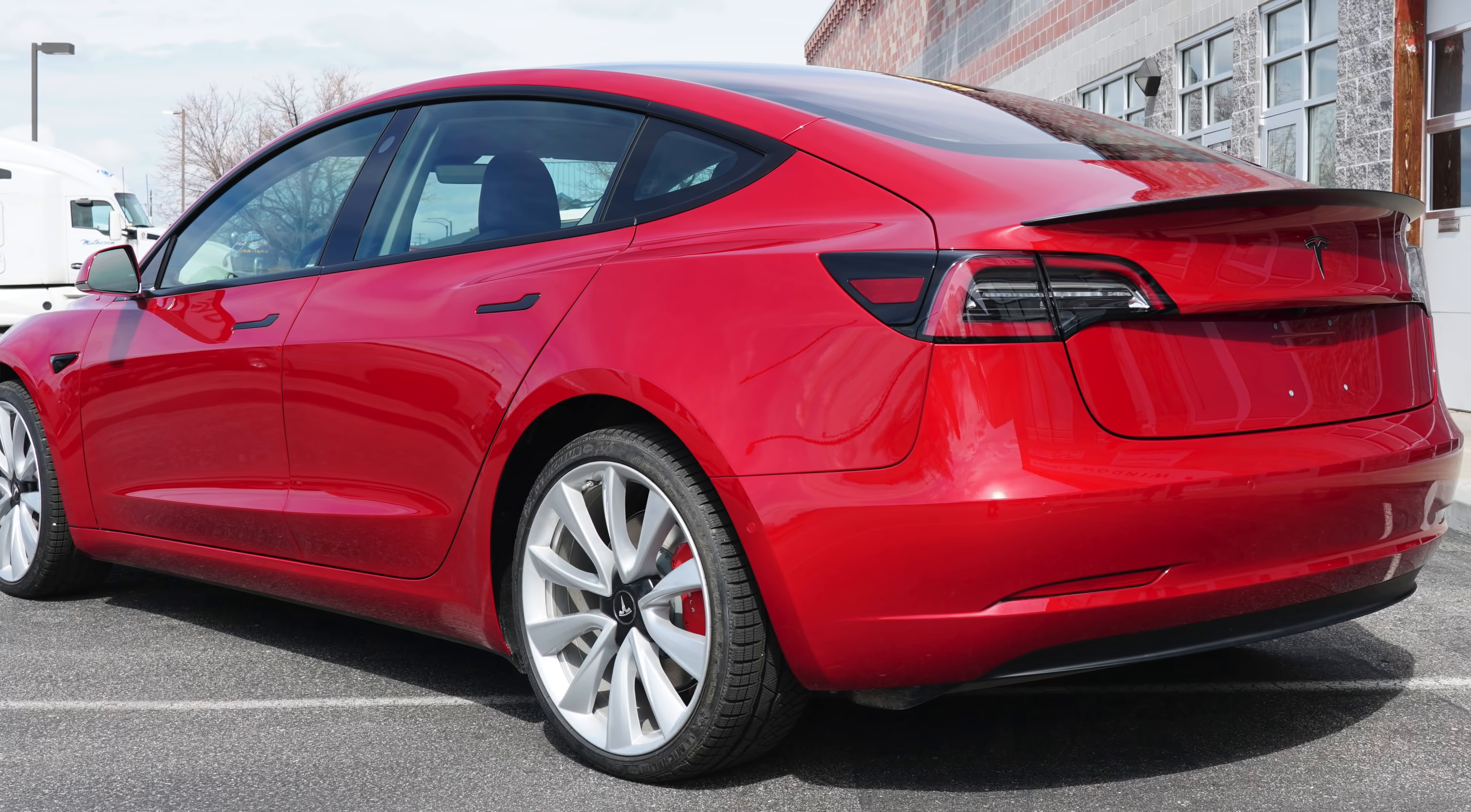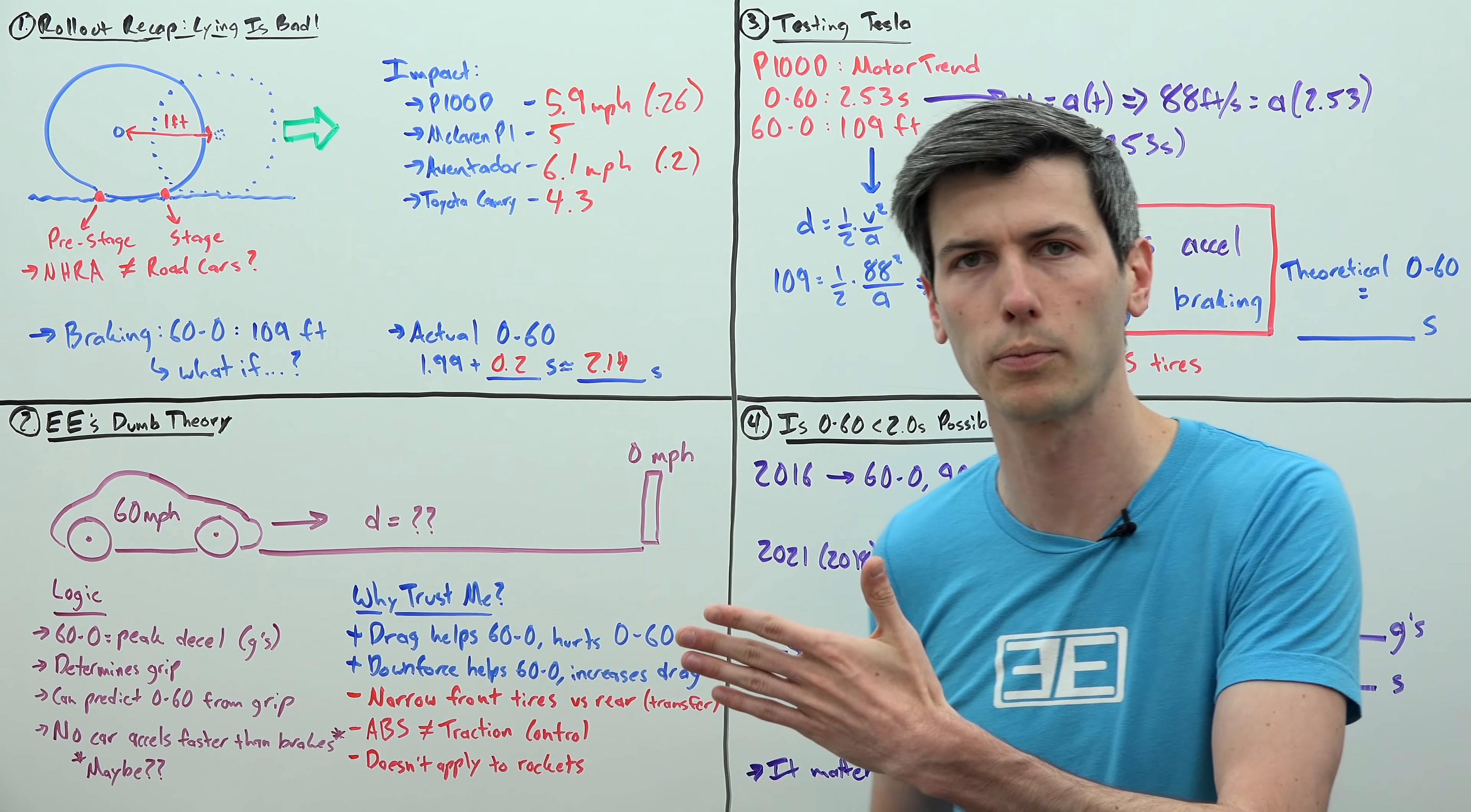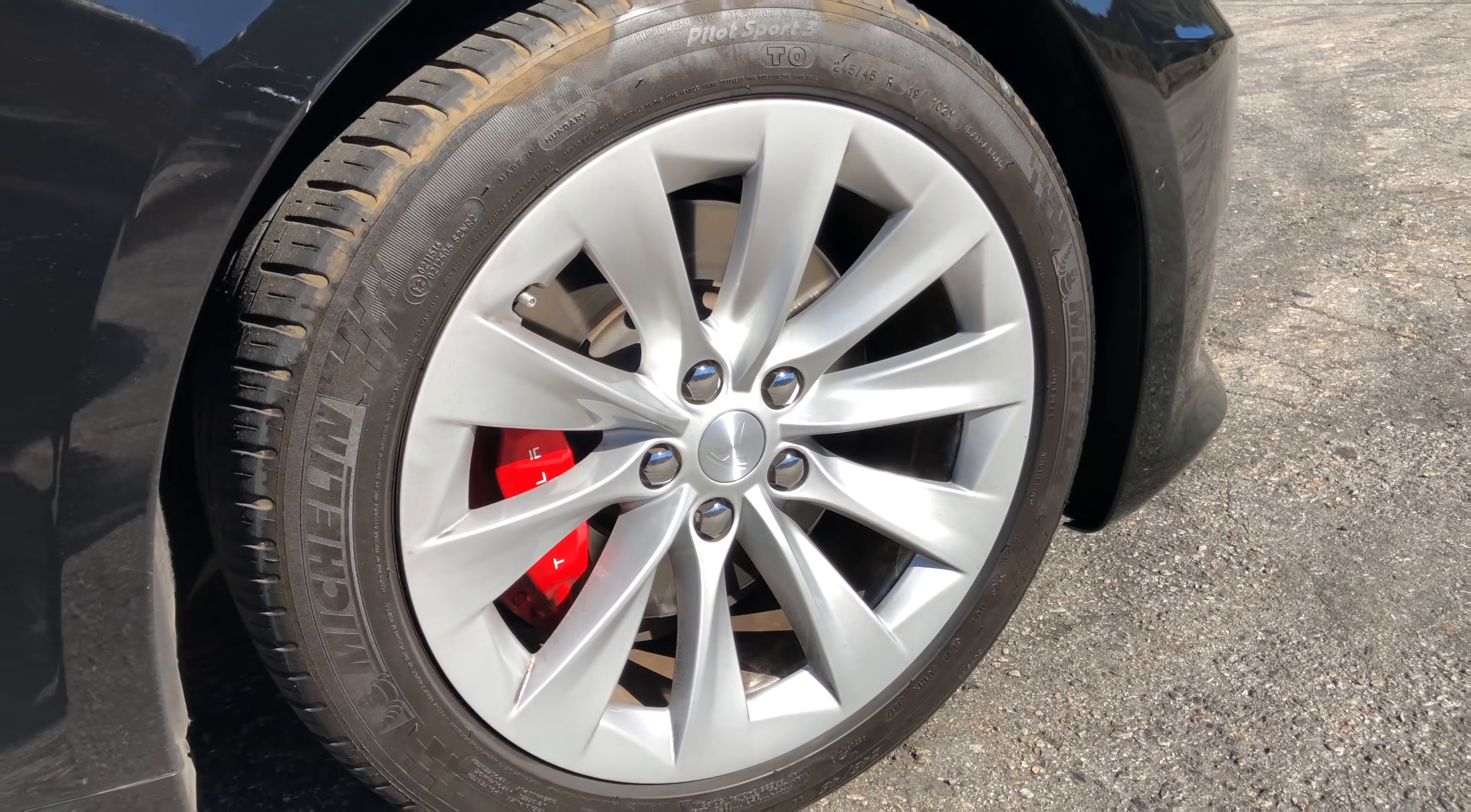And then finally, this logic does not apply to rockets, right? So in the future, if they do end up putting a rocket on the back of a car, well, the traction now is no longer an issue. The rocket is what's pushing it forward, not the tires. And so you can have a 0 to 60 that is faster than two seconds or whatever the frictional limit of those tires are.